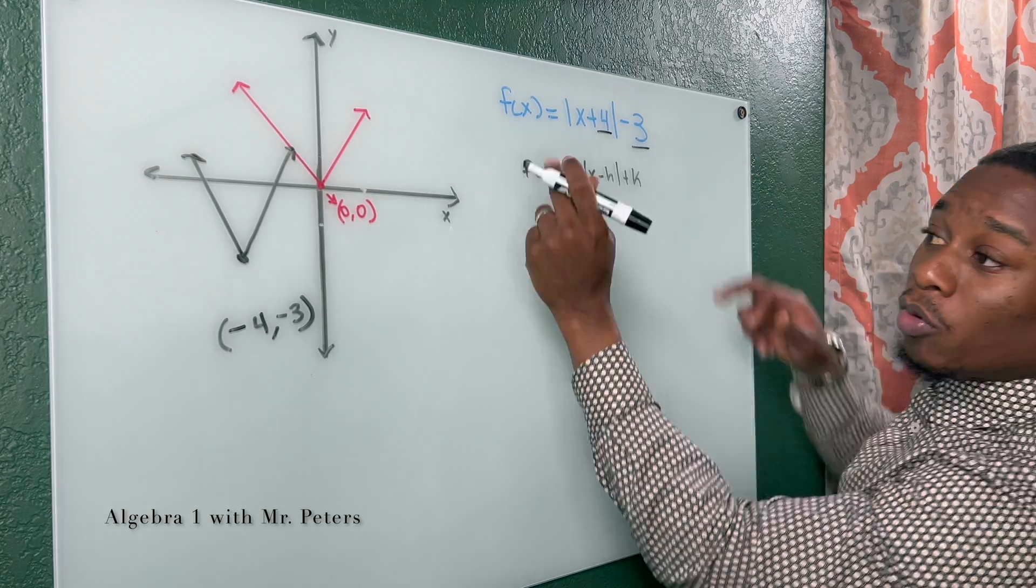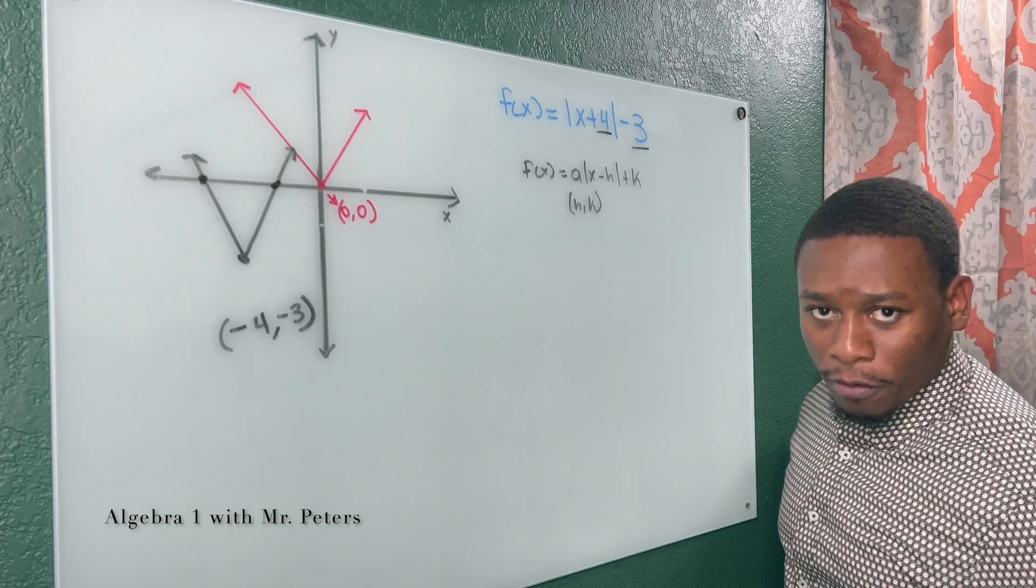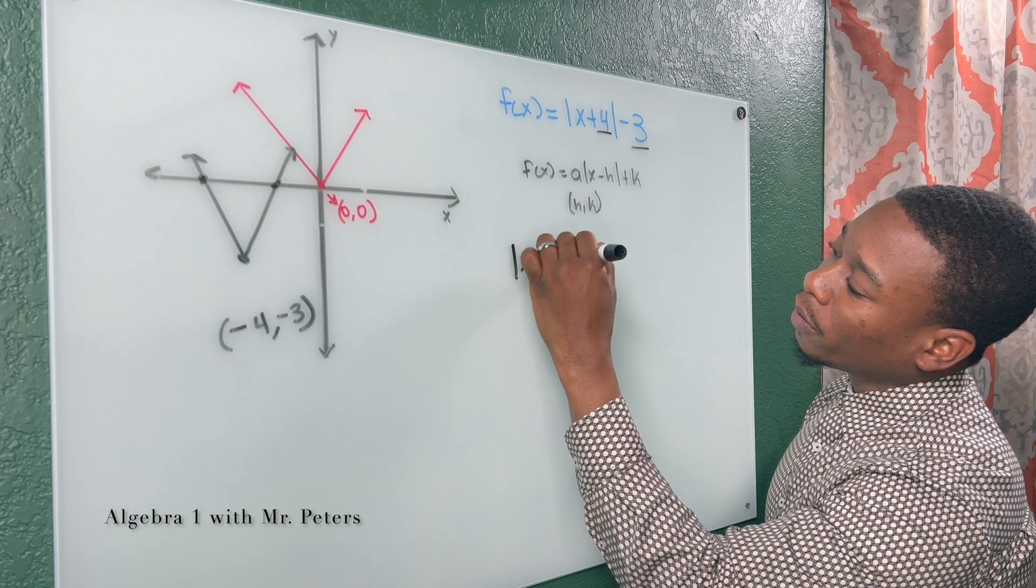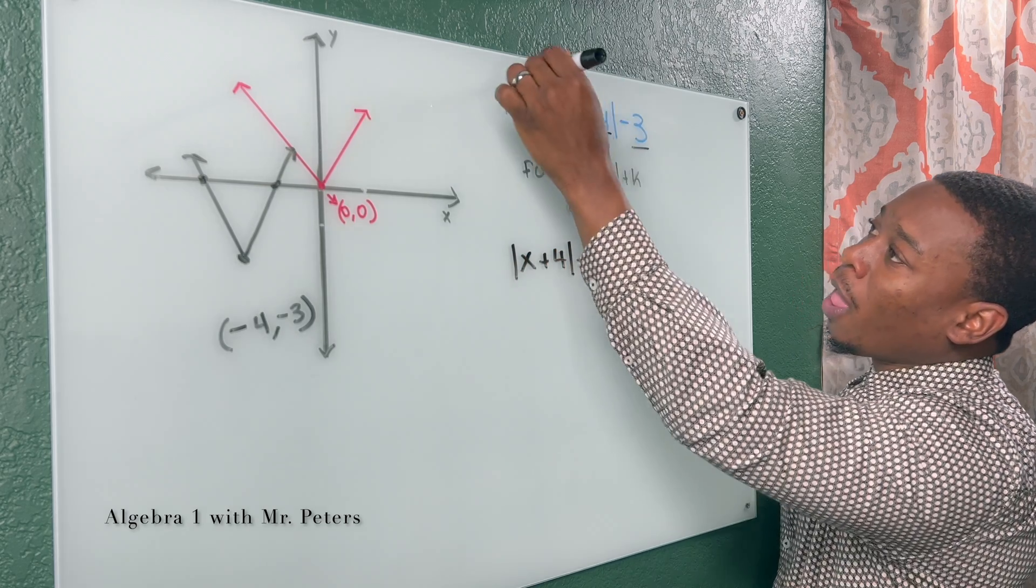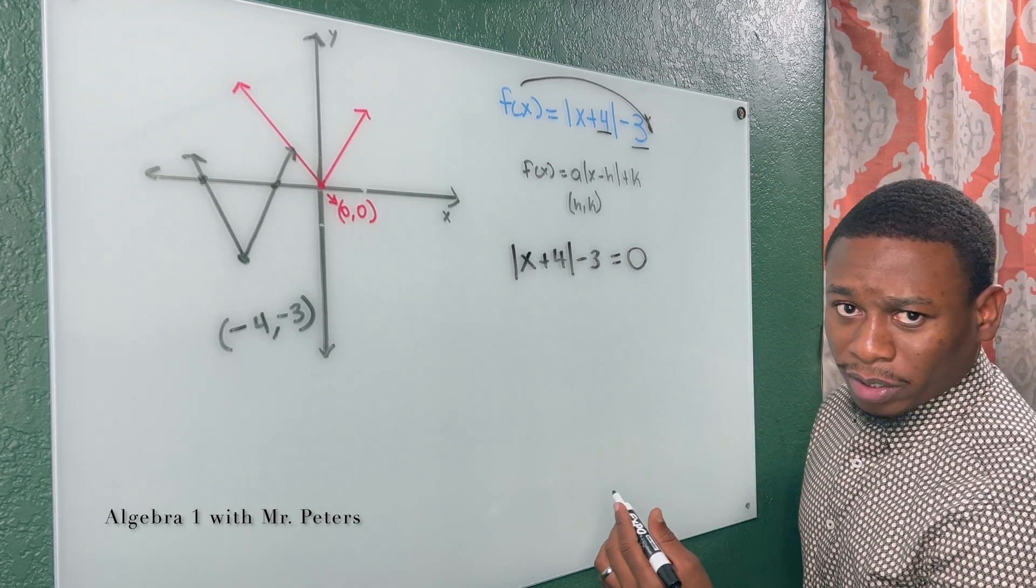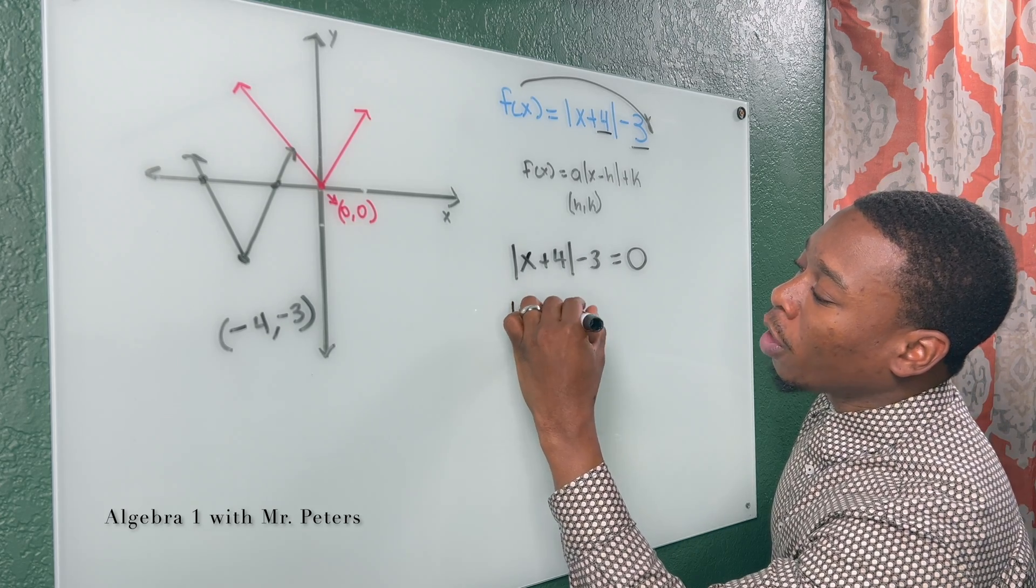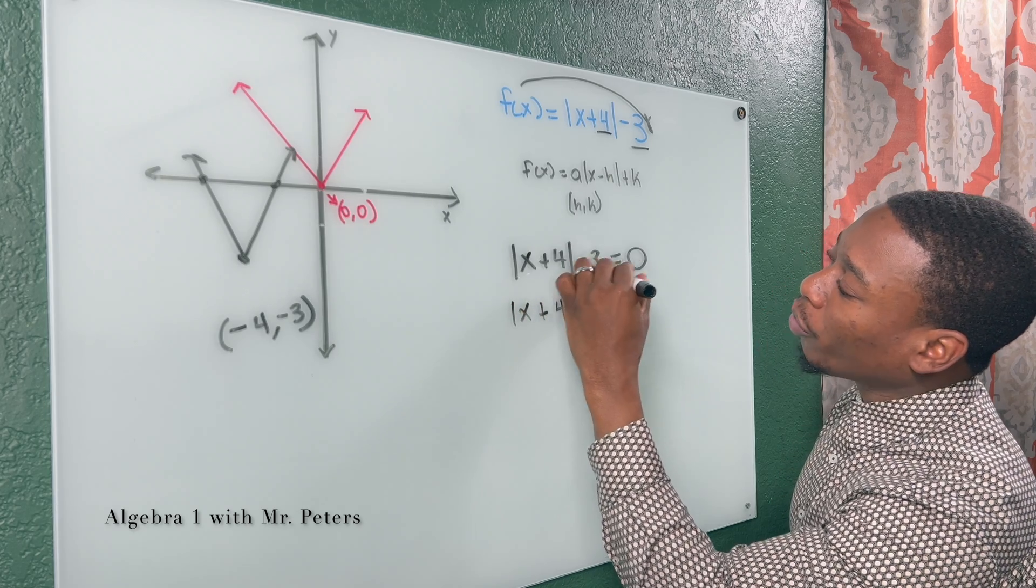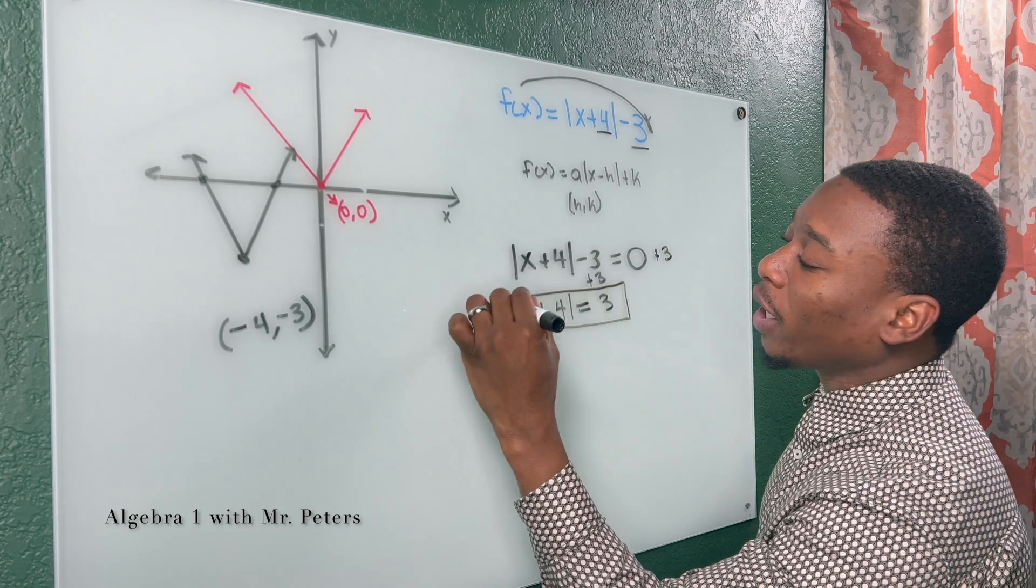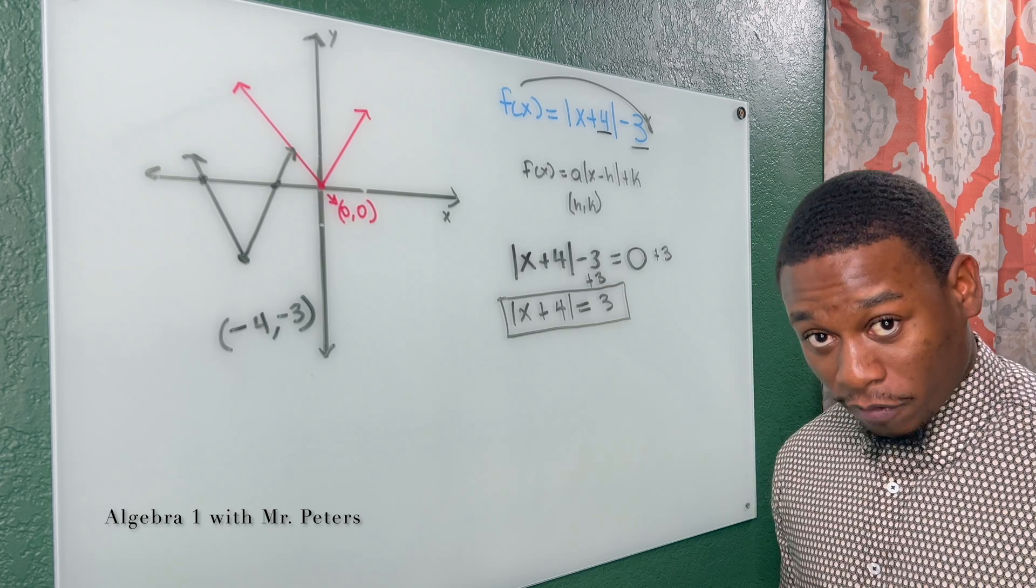So when we want to solve and find the zeros, the x-intercepts, these two points, we're going to substitute f of x with zero. So I have absolute value of x plus four minus three is equal to zero. I just put it at the end because I like my equations like that. So now the most important thing, we have to isolate the absolute value and get it by itself. Once I do, and I add three on both sides, we have to make sure that this equation that we created is a positive value.